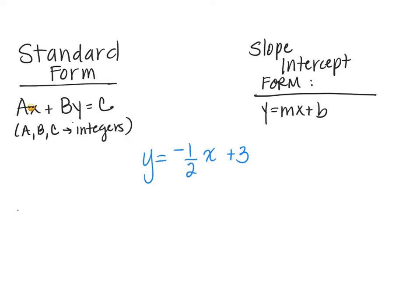So notice how in standard form, x and y are on the same side of the equation, and the constant C is over by itself. So first thing we're going to do is move the negative one-half x to the other side. So we end up with one-half x plus y equals 3.